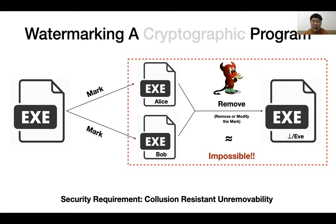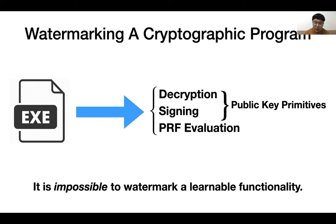Also, it requires that the extraction algorithm can extract the correct message from an honestly watermarked program. Its main security requirement is unremovability, which requires that the adversary is not able to remove or modify the message embedded in a watermarked program without significantly changing its functionality. Also, in practice, it is usually desired to have unremovability against collusion attacks.